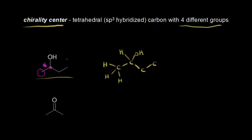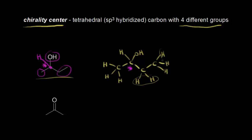There's a methyl group on one side, an OH group, an ethyl group, and also a hydrogen — so there are four different groups attached to that carbon, making it a chirality center. The next carbon has two hydrogens on it, so that's not a chirality center. And finally, the last carbon has three hydrogens — three of the same thing — so that carbon is not a chirality center. So there is one chirality center in this alcohol.